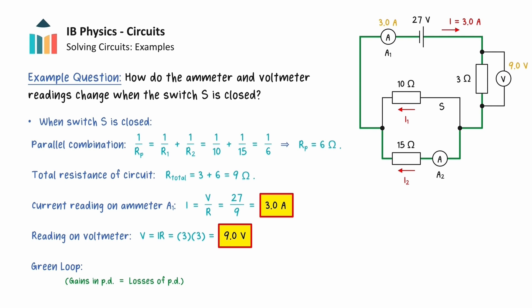The gains in potential difference come from the cell of 27 volts, while the losses of potential difference come from the 9 volts lost in the 3 ohm resistor and the potential difference across the 15 ohm resistor,